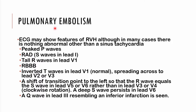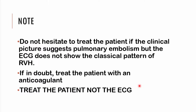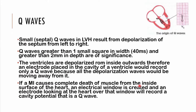On the ECG in pulmonary embolism, you may see peaked P waves, right axis deviation, tall R waves in lead V1, right bundle branch block, and inverted T waves in leads V1 spreading to V2 and V3. You may also see a shift of the transition point to the left, with equal R and S waves in V5 and V6, and a deep S wave in V6. A Q wave in lead 3 may resemble an inferior infarction. If in doubt, treat the patient with anticoagulants.